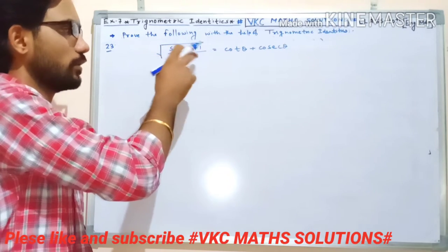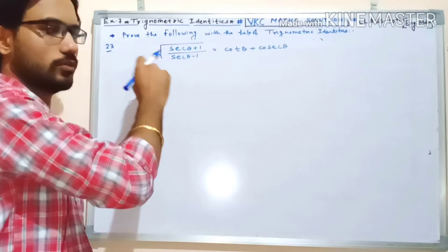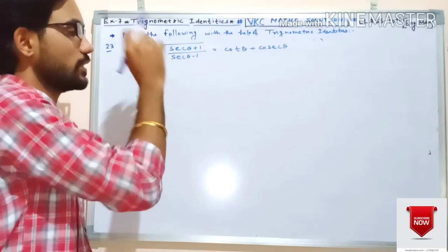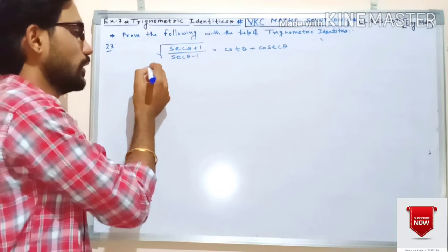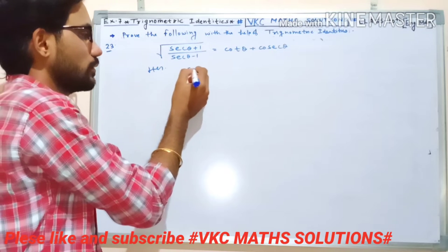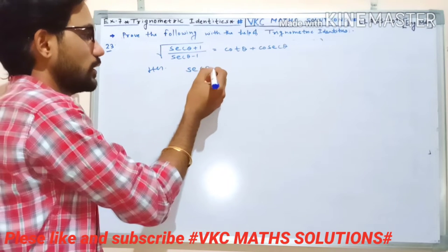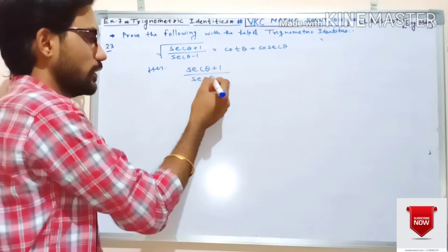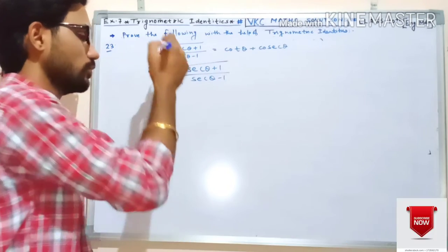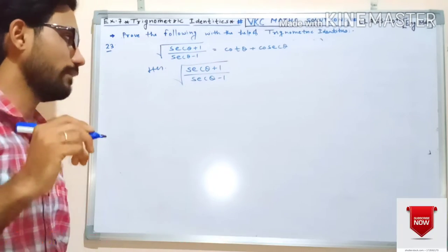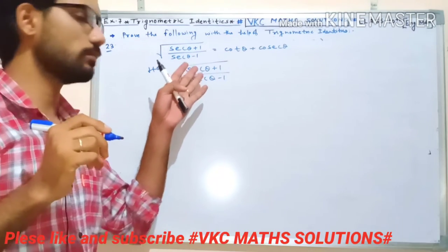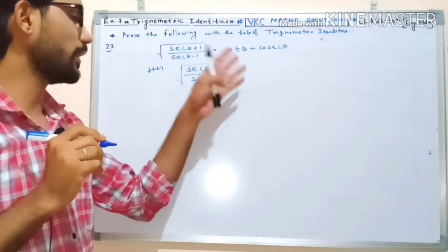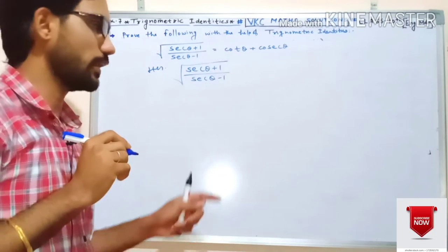Just like we rationalized the expression with 1 plus sign and 1 minus sign under square root, we will do the same here for the left-hand side. We can do this in two ways — by converting to sin/cos or by directly rationalizing.